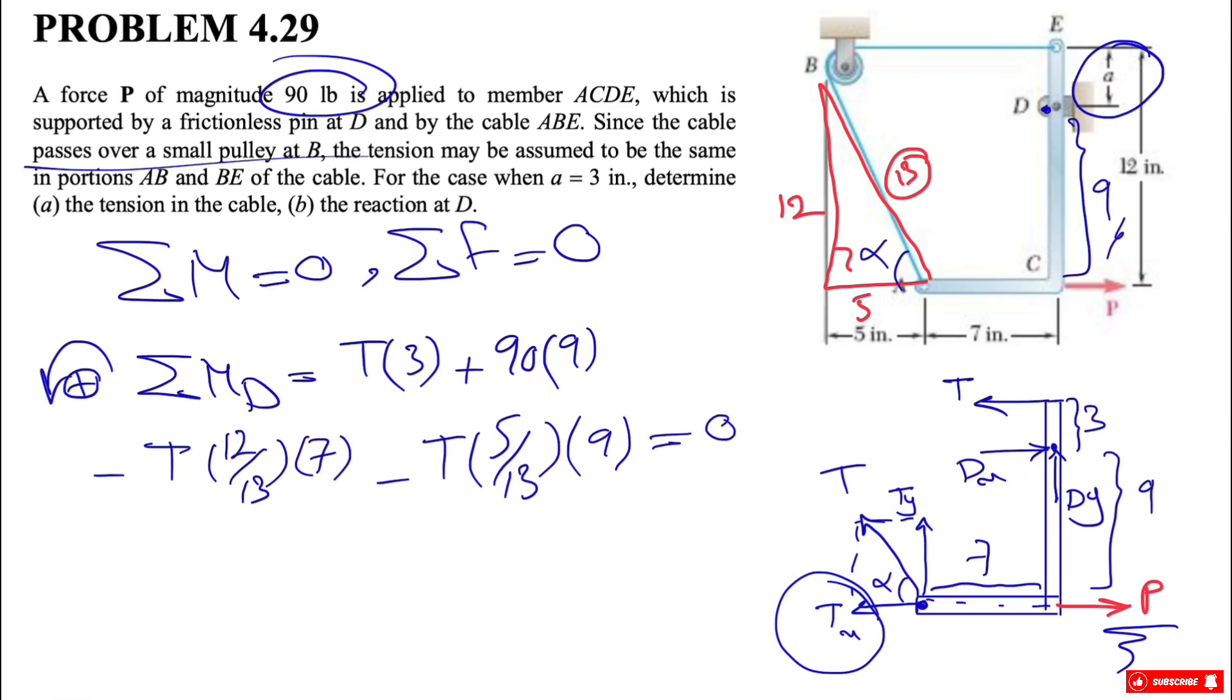This equals zero. The only unknown in here would be T and we can figure out T, which is 117 pounds.